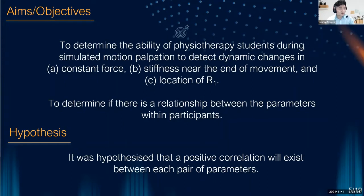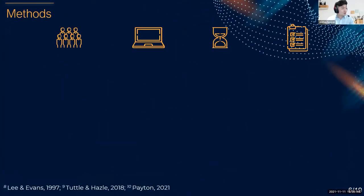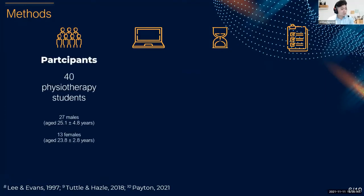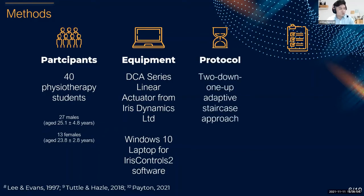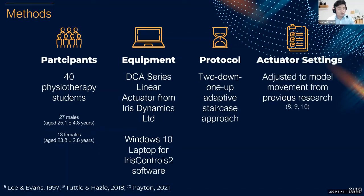The aims were to determine the ability of physiotherapy students during simulated motion palpation to detect dynamic changes in: (a) constant force, (b) stiffness at the end of movement, and (c) the location of R1 — and to determine whether there was a relationship between pairs of parameters within participants. Forty physiotherapy participants were recruited for a one-hour study. The equipment used was the DCA Series linear actuator from IRIS Dynamics Limited, run through IRIS Controls 2 software on a Windows 10 laptop. A two-down one-up adaptive staircase approach was used, and device settings were adjusted to model movements from in vivo studies of the lumbar and thoracic spine and therapist perception of cervical spinal stiffness.